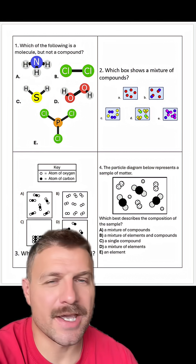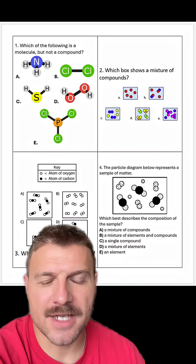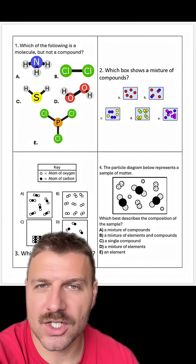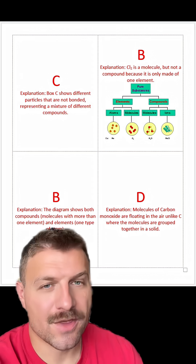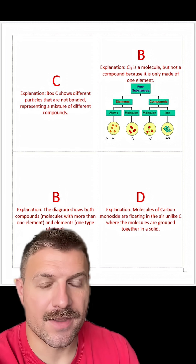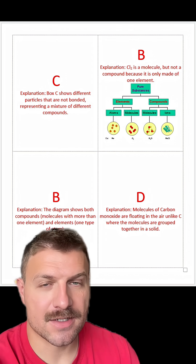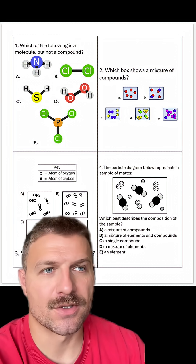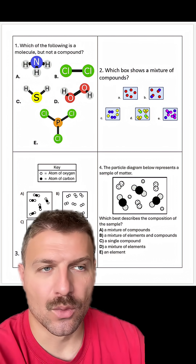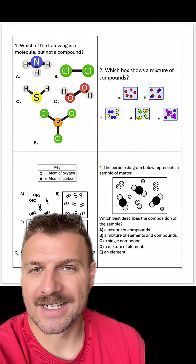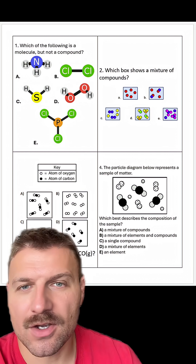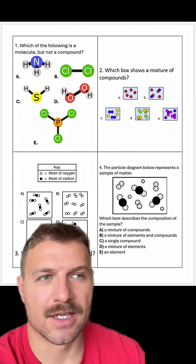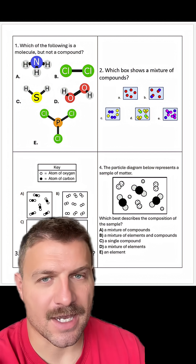Hey school science teachers, would you like multiple choice diagram questions about biology and chemistry with answers and explanations why the answer is correct? I primarily like to use these to help students learn how to work through a question with a complex image. These are easy to print out, cut out, and use time and time again.